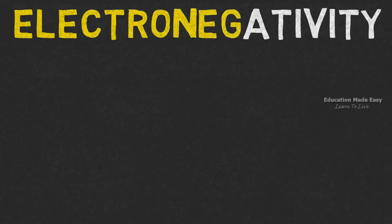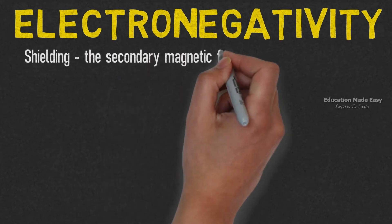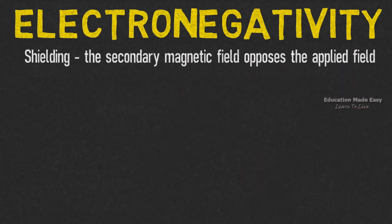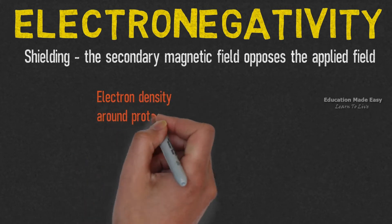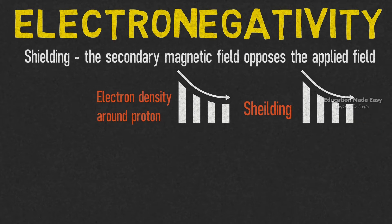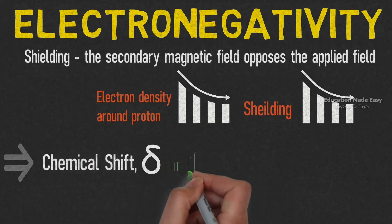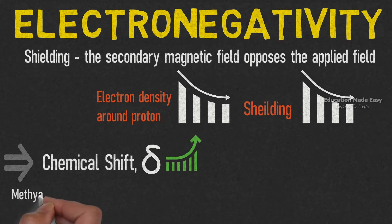Let's start with electronegativity. We already know that shielding means the secondary magnetic field opposes the applied field. As the electron density around the proton decreases, shielding also decreases, which implies the chemical shift small delta increases.